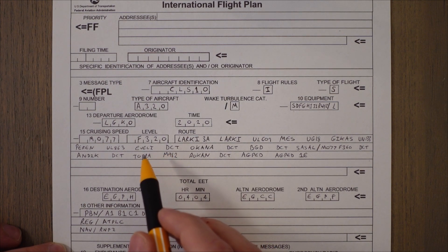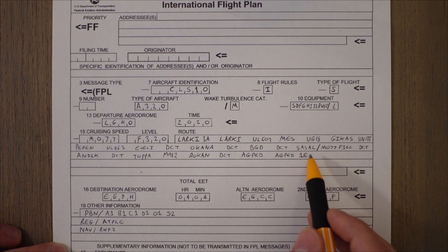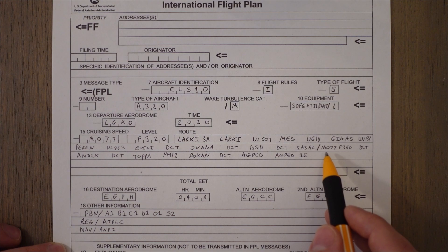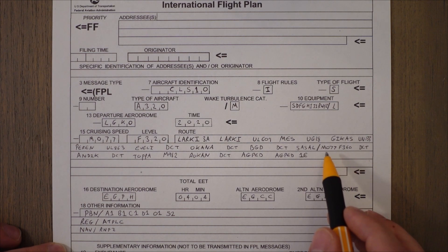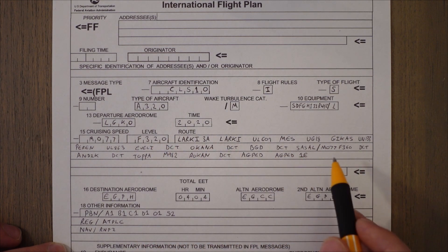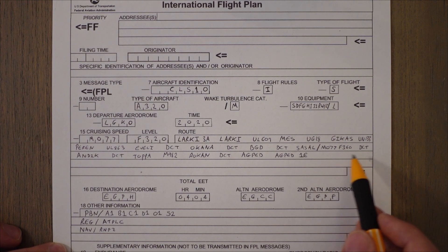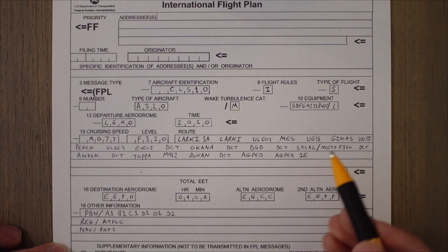And then you can see here at this point SASAL we've got a slash and Mach 0.77 written again and flight level 360. So whenever we have altitude or speed changes that are significant we put a slash and write in the new speed and level so the air traffic control know hey we want to climb at SASAL to flight level 360 from flight level 320. And then we carry on our route all the way to AGPED1E which is the STAR for Edinburgh which is number 16.